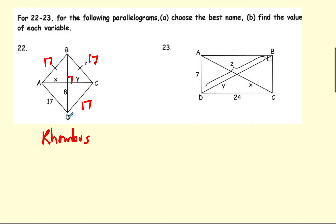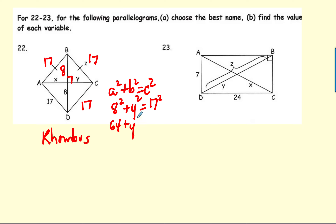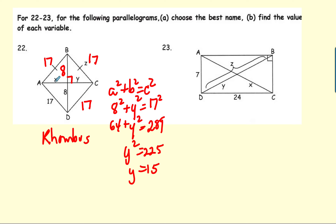I know this must be a right angle because that's what happens in a rhombus. This side is 8, so this is 8, and I have a right triangle. Using a² + b² = c²: 64 + y² = 17² = 289. Subtracting 64 gives y² = 225, and taking the square root gives y = 15. So z = 17, y = 15, and x = 15 as well.